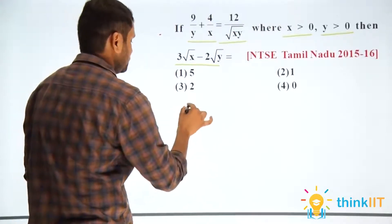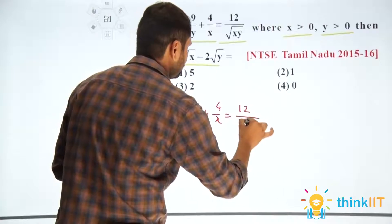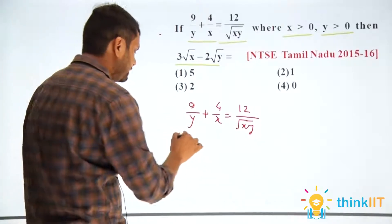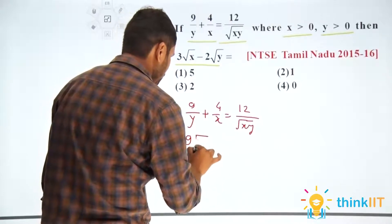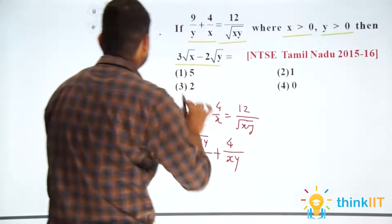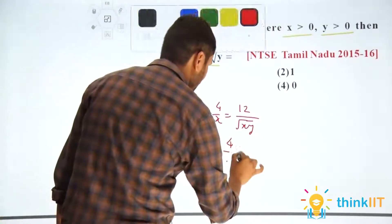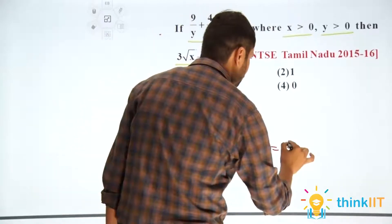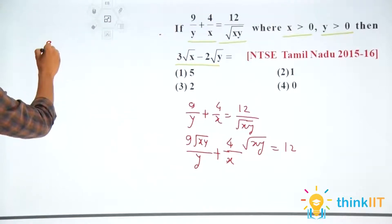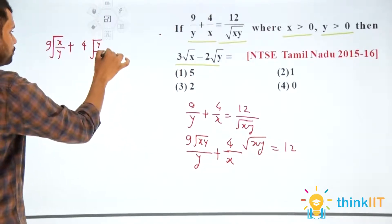So let's write the question: 9 upon y plus 4 upon x is equal to 12 times of root of xy. I can multiply this root of xy to all the two quantities. I'll get 9 times of root xy upon y plus 4 times of root xy upon x is equal to 12. Here, a root of y will cancel with y, and a root of x will cancel with x. We can then have 9 times root x upon root y plus 4 times root y upon root x is equal to 12.